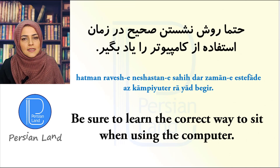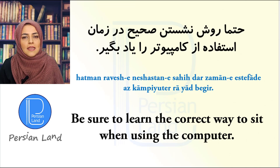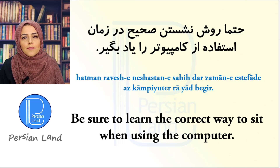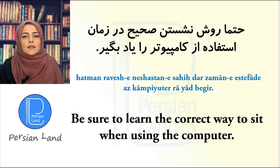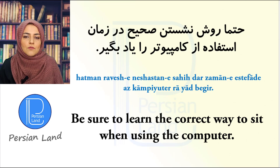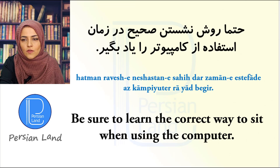حتماً روش نشستن صحیح در زمان استفاده از کامپیوتر را یاد بگیر. حتماً means 'be sure'. نشستن صحیح means 'to sit correctly / the correct way to sit'. در زمان استفاده از کامپیوتر means 'when using the computer'. یاد گرفتن means 'to learn' — it is a compound verb.